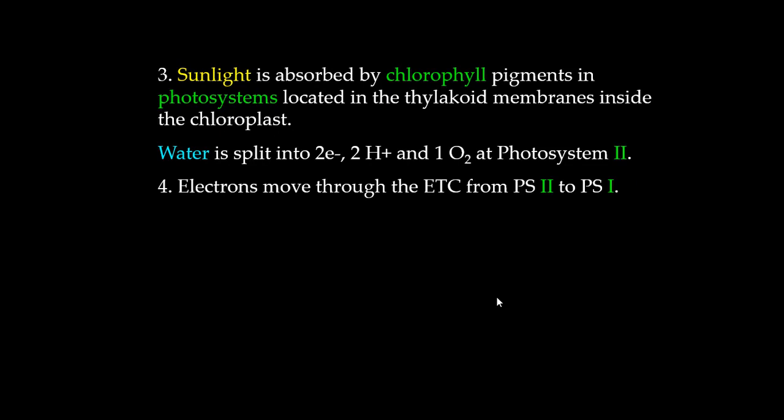Electrons move through the electron transport chain from Photosystem 2 to Photosystem 1. Energy from this electron transport moves hydrogen ions from stroma to thylakoid space.